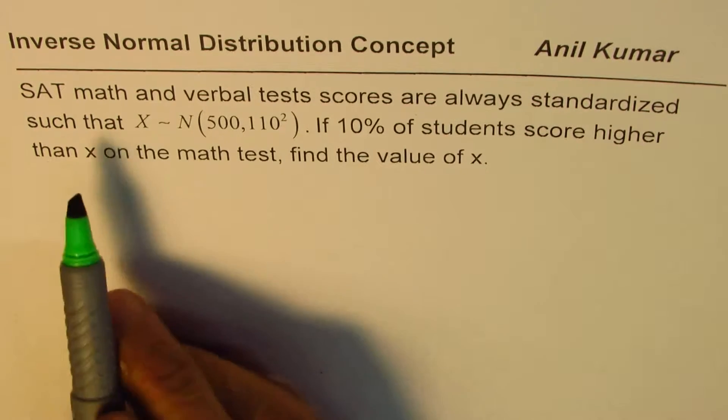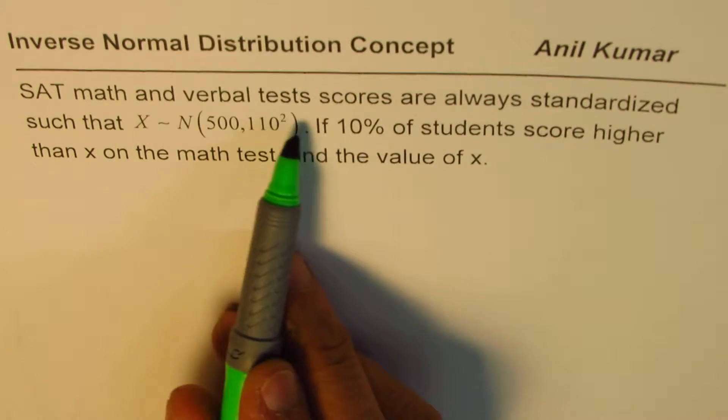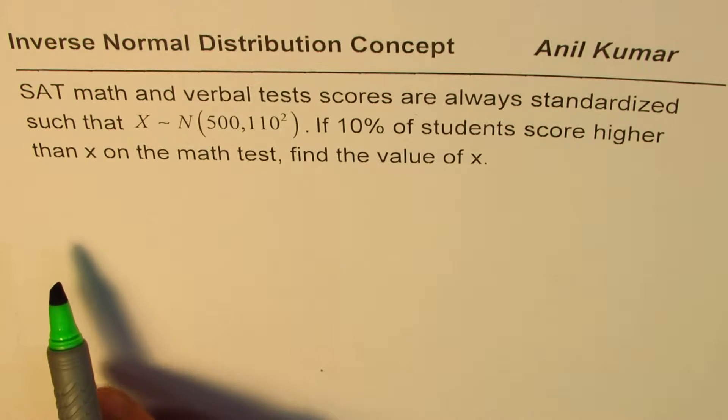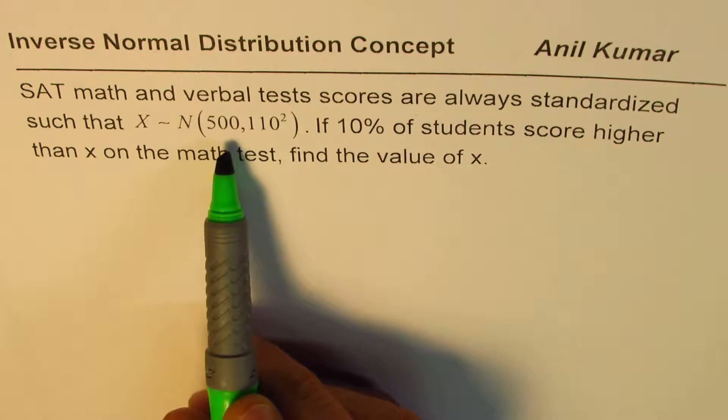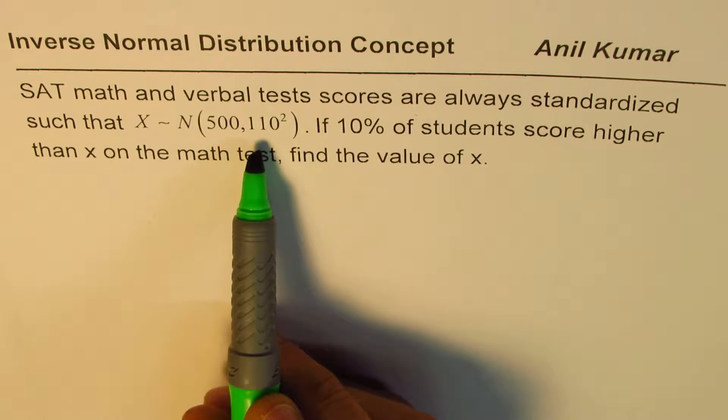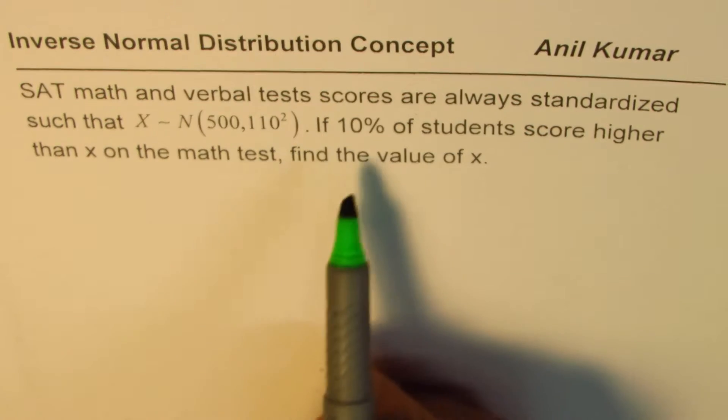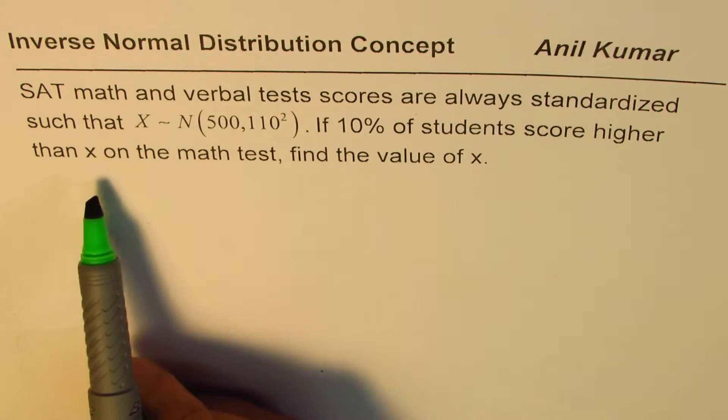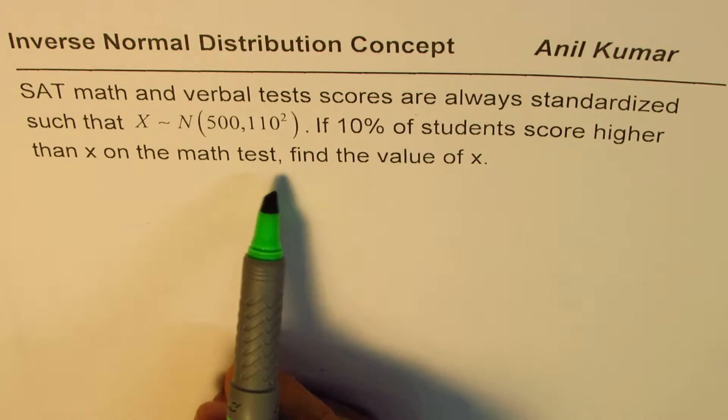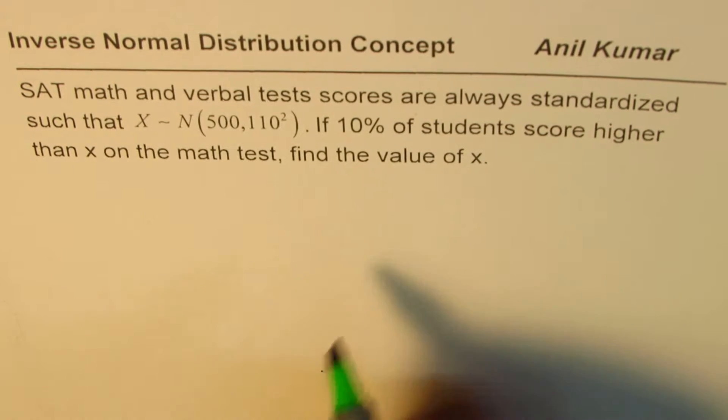The question is: SAT math and verbal test scores are always standardized such that they follow a normal distribution with mean of 500 and standard deviation of 110. If 10% of students score higher than x on the math test, find the value of x. That's the question for us.